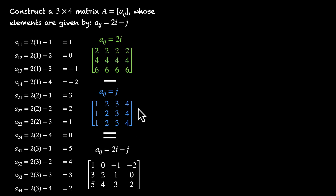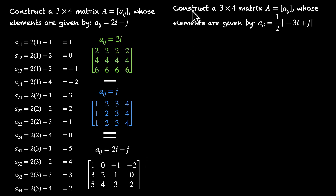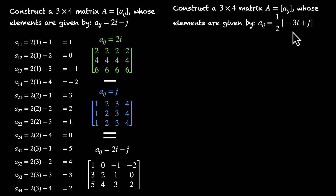Let's try one last problem. Construct a 3x4 matrix A whose elements are given by Aij equals one half times the absolute value of (minus 3i plus j). Pause the video and try this on your own.